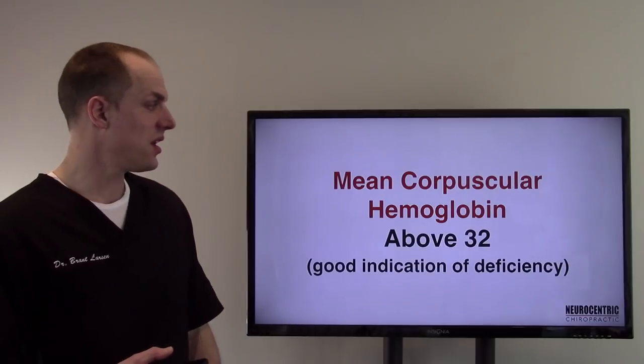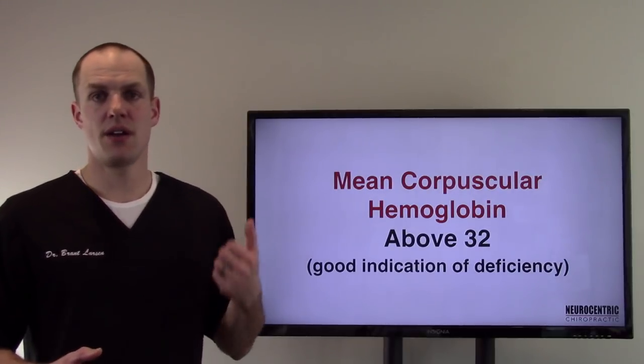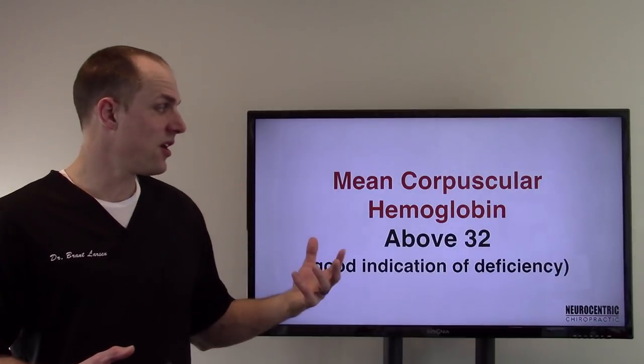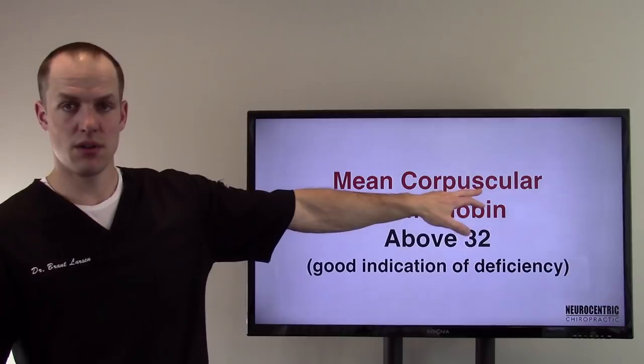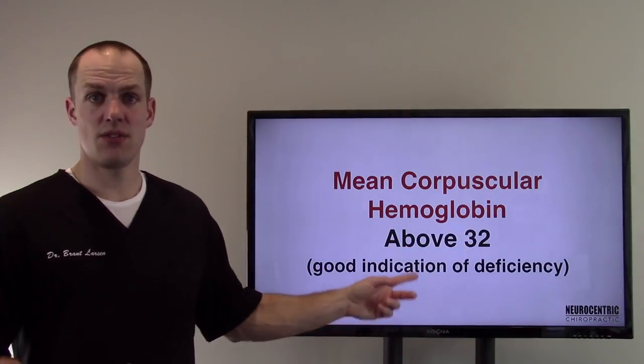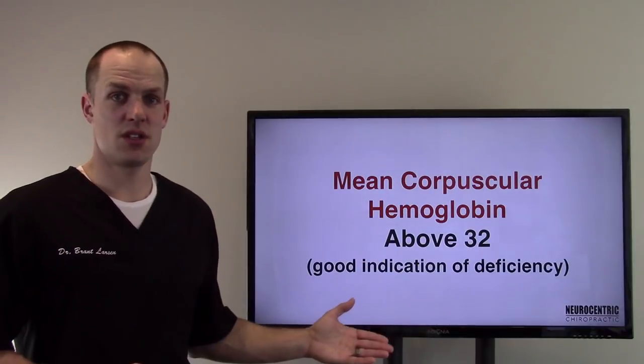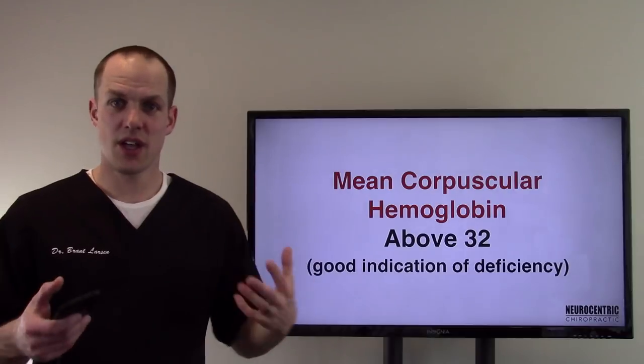Number two here is mean corpuscular hemoglobin. Hemoglobin carries iron and oxygen. It's very important to get transported around the body. That's why it's in the corpuscle or red blood cell. Anything above around a 32, another good indication of deficiency. If both of these are deficient, it's an even greater indication, right? Because now you have two things that are kind of adding up.